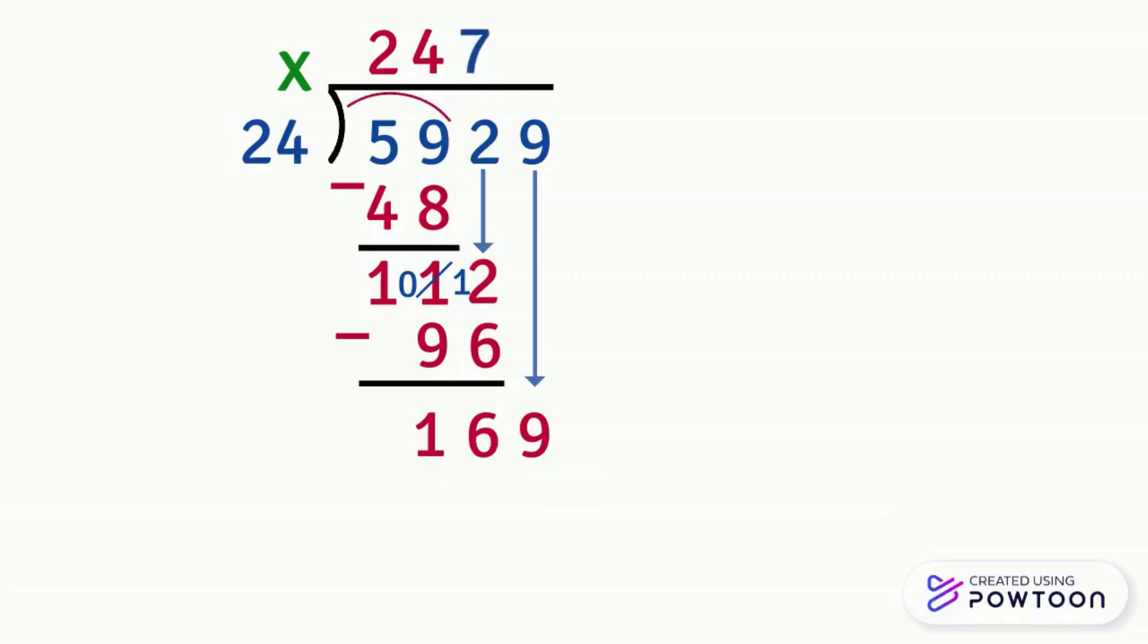Then multiply 24 by 7. 7 times 4 equals 28. We write 8 and we carry 2. 7 times 2 equals 14. Plus 2 equals 16. So 24 times 7 equals 168.